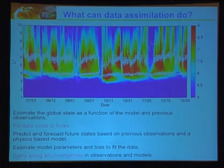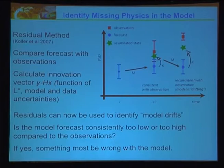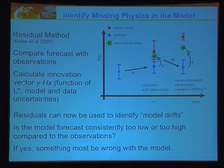All of these carry uncertainty, but there's also a problem: we don't have a complete model. Our model may be incomplete or have model errors that are overwhelming the data assimilation. Kohler et al. 2007 developed a residual method where they use data assimilation to estimate missing source terms in this one-dimensional radial diffusion problem. They calculated the innovation vector — the observations minus the state of the system — which is a function of L* and gives model and data uncertainties.